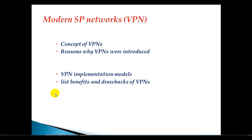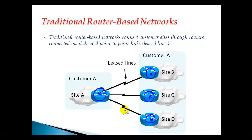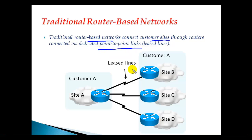Let's get started with traditional router-based networks. When you talk about WAN connections, going back to the early 80s, if site A of a customer wants to connect with site B, site C, and site D, you need a separate cable or separate leased line connection given by the service provider. This is the traditional router-based network which connects customer sites via a dedicated point-to-point leased line connection.